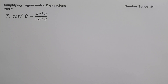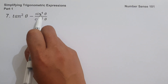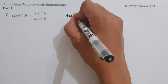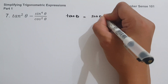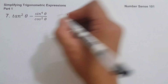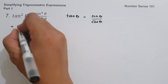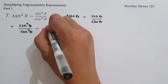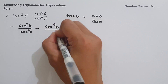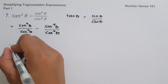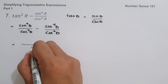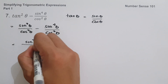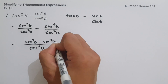On example number seven, we have tan²θ − sin⁴θ/cos²θ. We change tan θ to sin θ/cos θ, so tan²θ becomes sin²θ/cos²θ. Since they share the same denominator cos²θ, the numerator is sin²θ − sin⁴θ.